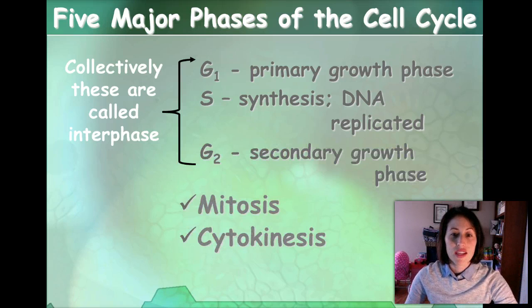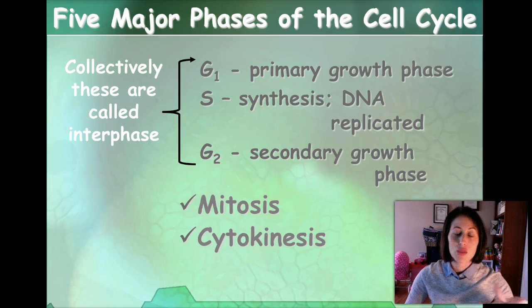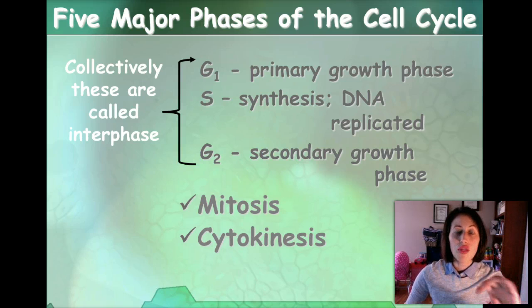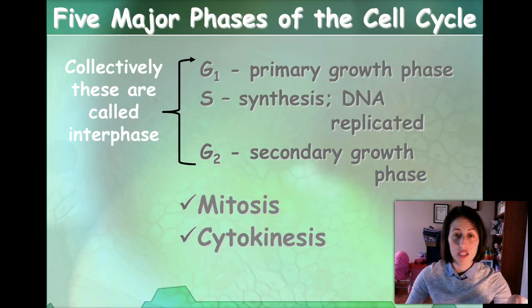The next phase is G2, and that's the secondary growth phase. This one's actually a little bit shorter — this is where the cell starts preparing for division. All three of those together are called interphase, and this is the longest part of a cell's life cycle.